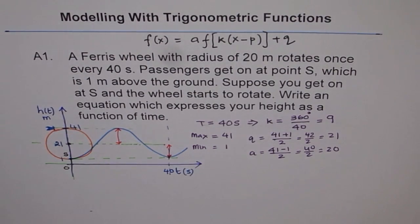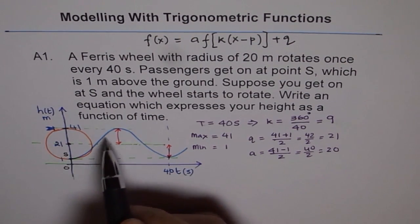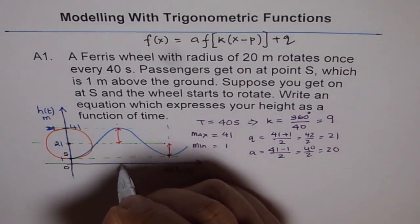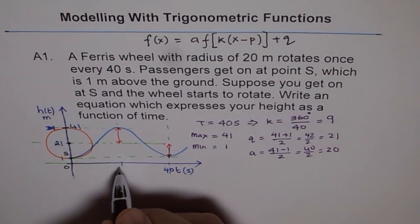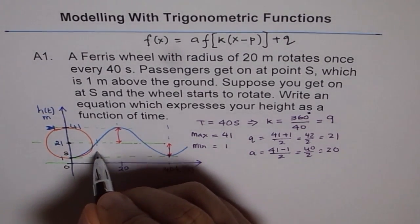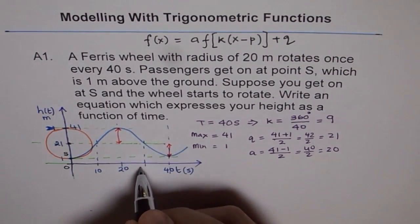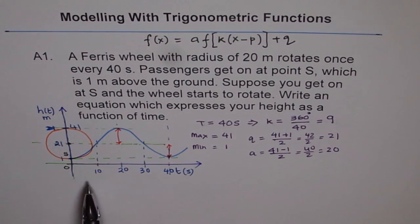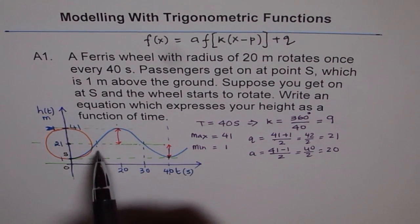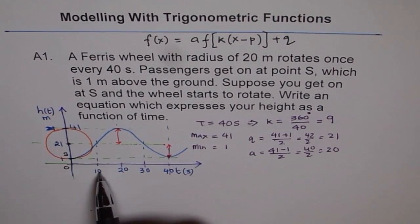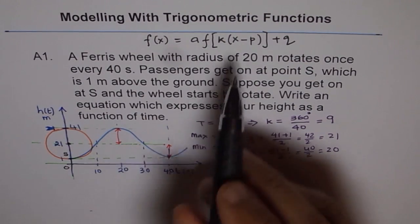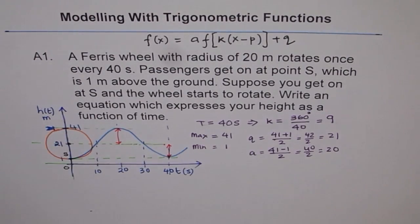Now we need to find the value of P. When we say one full wave is 40, then half should be 20. Half of 20 is 10. So our scale is 10, 20, and this is 30 from symmetry. If you are considering a sine wave, then basically the sine wave is starting after 10 seconds, so P becomes 10. If you are considering a cos wave, then the cos wave is starting after 20 seconds, so P will be 20.